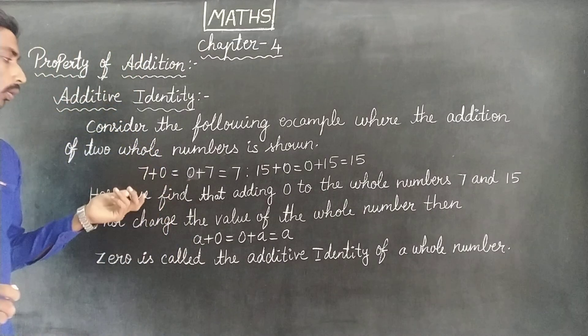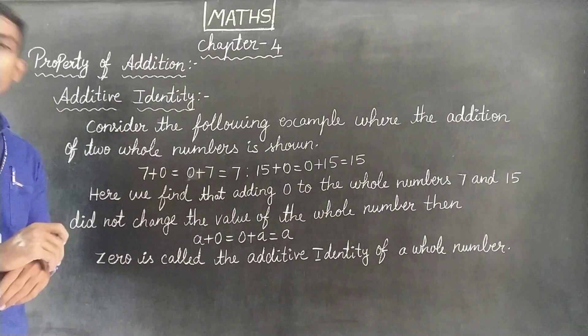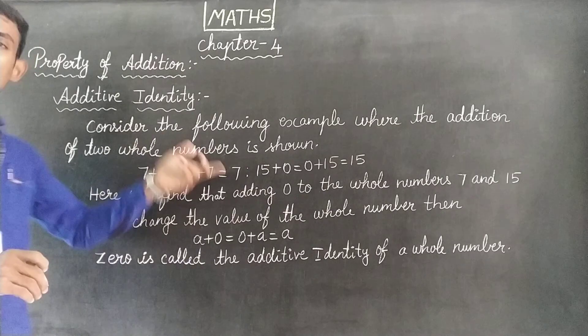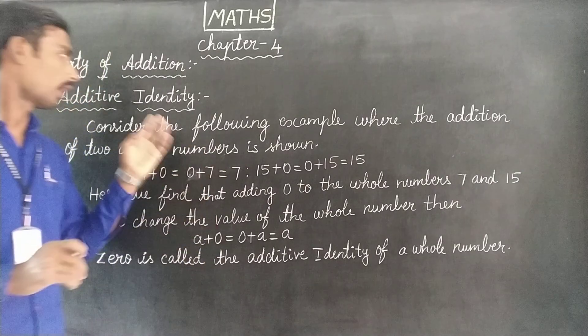So we can add a whole number, add zero value, get the same whole number. That's the additive identity.